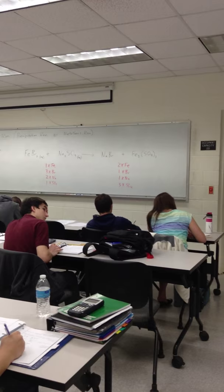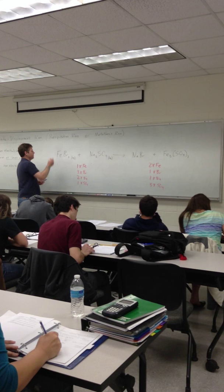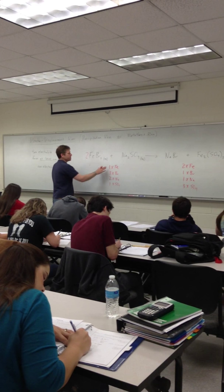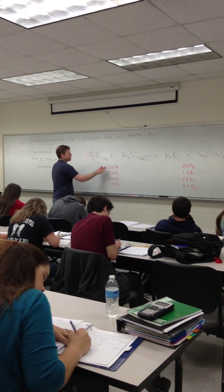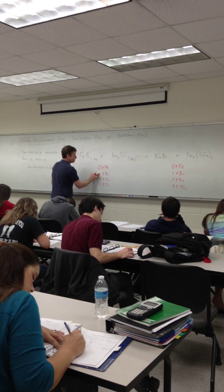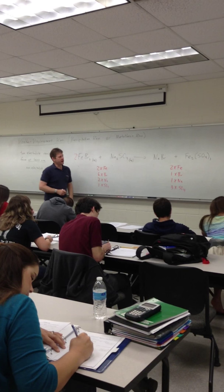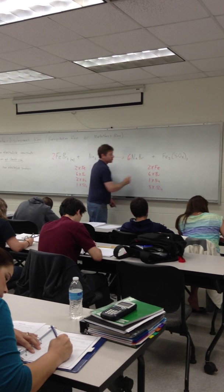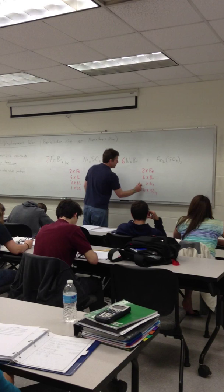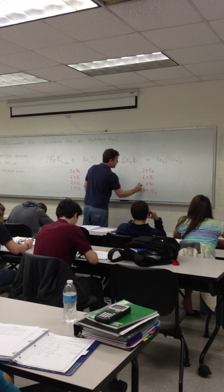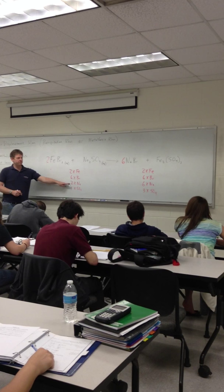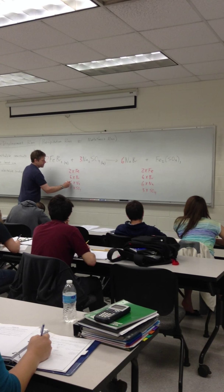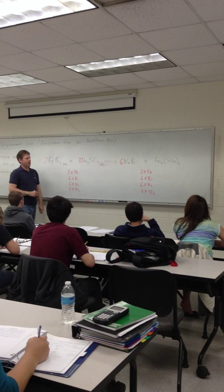So what about balancing this? Well, notice we need 2 irons. So I'll change this invisible 1 coefficient here to a 2. Now I've got 2 irons on each side, but I've also messed with the bromines. We now have 6 of them. Moving next to the bromines, we do have 6 in the reactant side. And by changing the invisible 1 to a 6, we now have 6 in the product side as well. But I've now messed with the sodiums. We now have 6 of those as well. We only have 2 sodiums over here, so I'll have to change this invisible 1 to a 3. Now I've got 6 sodiums in the reactant side. But I've also messed with the sulfates. We now have 3. And we're done.